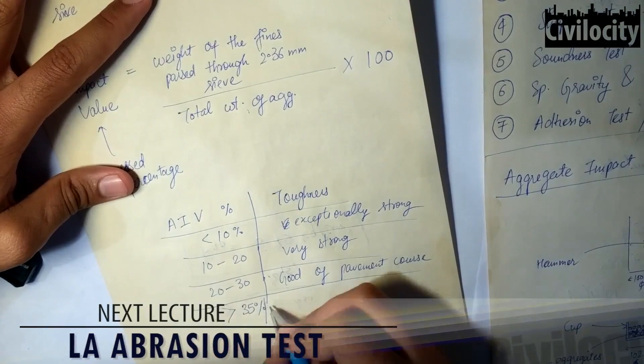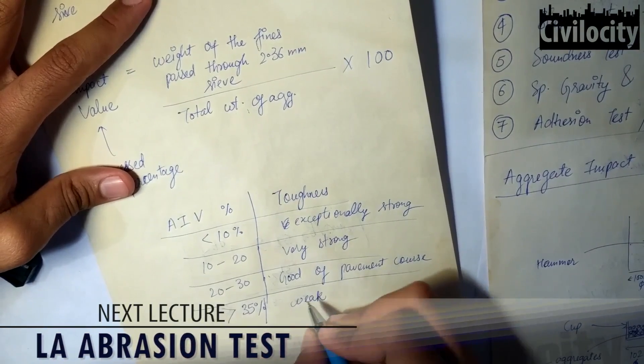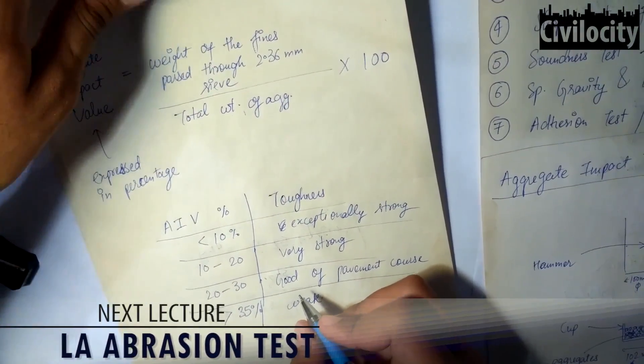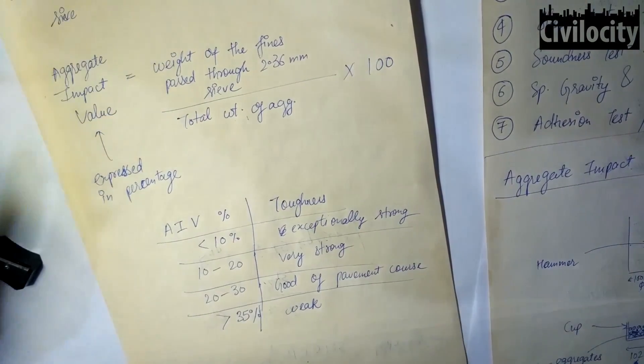The maximum permissible value is 35 percent for the bituminous macadam and 40 percent for the water-bound macadam courses.